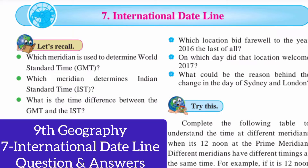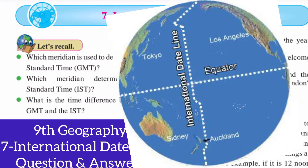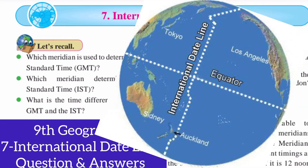The International Dateline is an internationally accepted demarcation on the surface of Earth, running between the South Pole and North Pole and serving as a boundary between one calendar day and the next. It passes through the Pacific Ocean, roughly following the 180 degree line of longitude and deviating to pass around some territories and island groups.